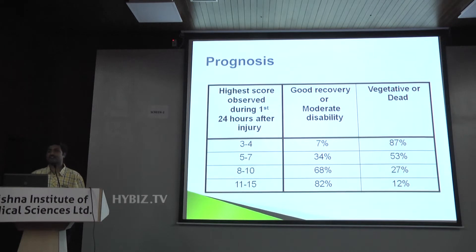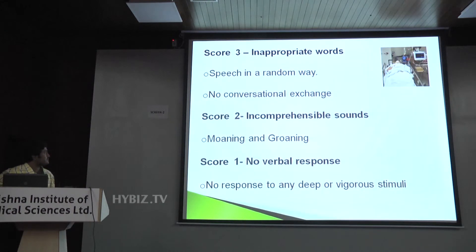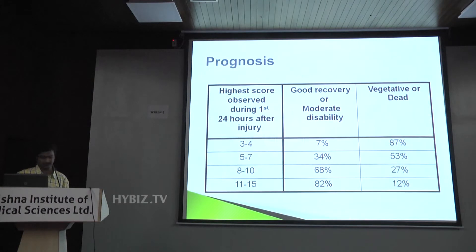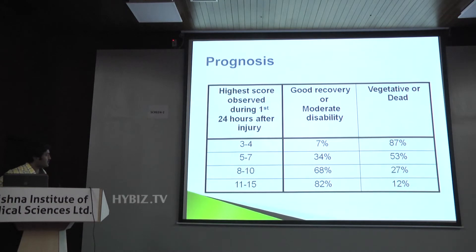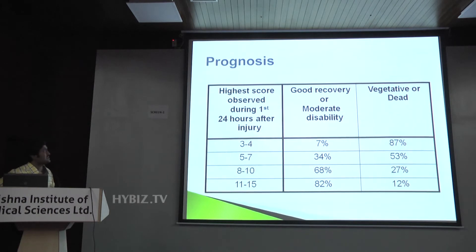What is the importance of the Glasgow Coma Scale? Apart from monitoring, it helps in prognosis. This chart clearly shows that if the Glasgow Coma Scale in the first 24 hours is good — 11 to 15 — the chances of recovery are very high. But if the initial Glasgow Coma Scale within 24 hours is low, this is after resuscitation, the chances of recovery are less.